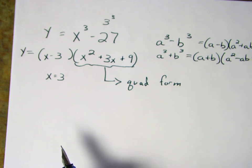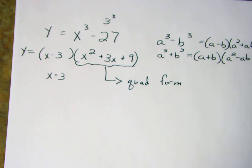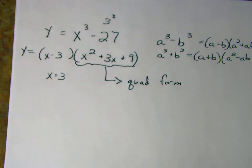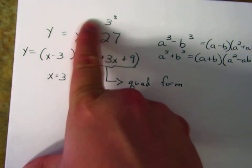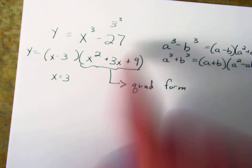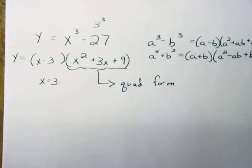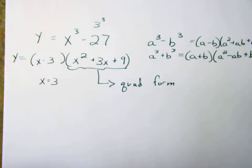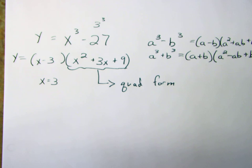Once we've factored any of these types of polynomials and found the x-intercepts, we can use the first term to find the degree and end behavior, and use the last term to find the y-intercept. With the degree, x-intercepts, and y-intercept, we can sketch a graph — and that's the whole goal of this first section.